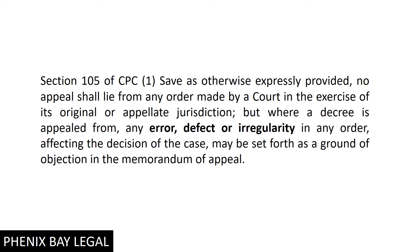Second, if we come to commissioner appointment — if your application for commissioner appointment is rejected, and you had argued that it was very necessary because something illegal is happening and the court did not allow it — then you can file an appeal. In the comment section, someone mentioned they had an application under Order 7 Rule 11 and the court rejected it. Is it an interlocutory application? Yes, but it is also an appeal-able matter. You have to see whether there is an error, defect, or irregularity — then you can go to appeal.